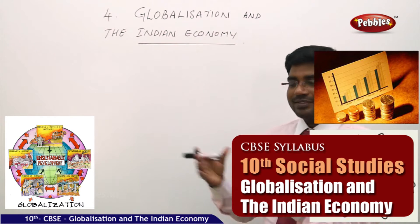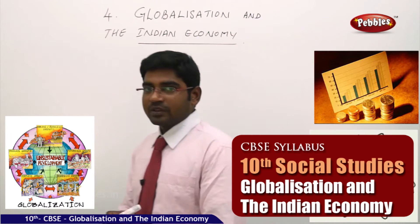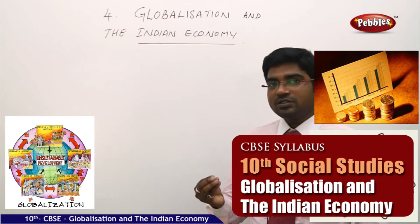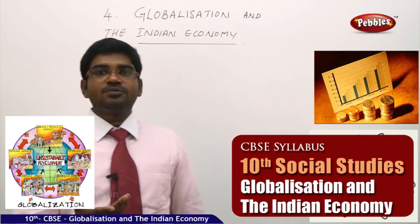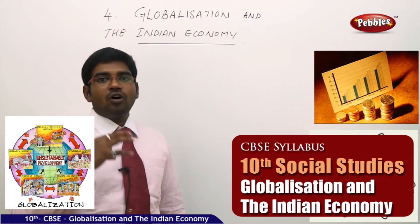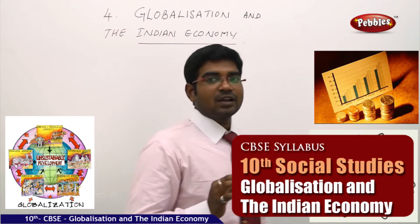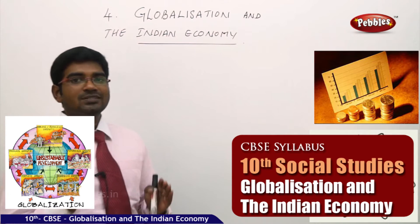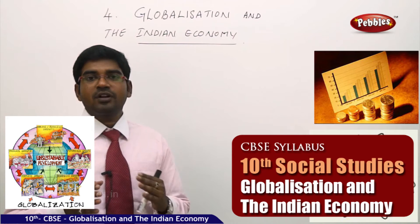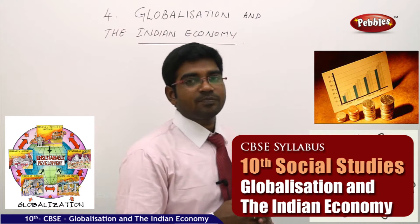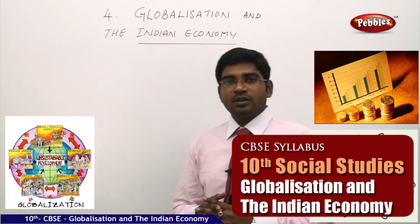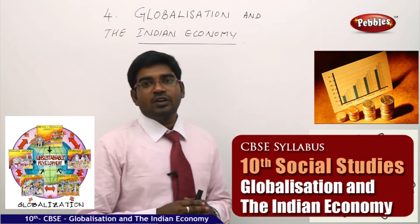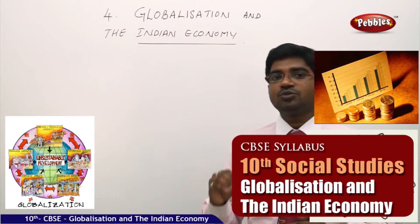Earlier on Indian roads, before the 1990s, even the Prime Minister, the President, or the Chief Minister and Governors all used to use the Ambassador as their official car. The Ambassador was considered the most privileged and luxurious car, providing comfort for the topmost leaders of India. Even the private privileged class also used Ambassador cars or Fiat cars.